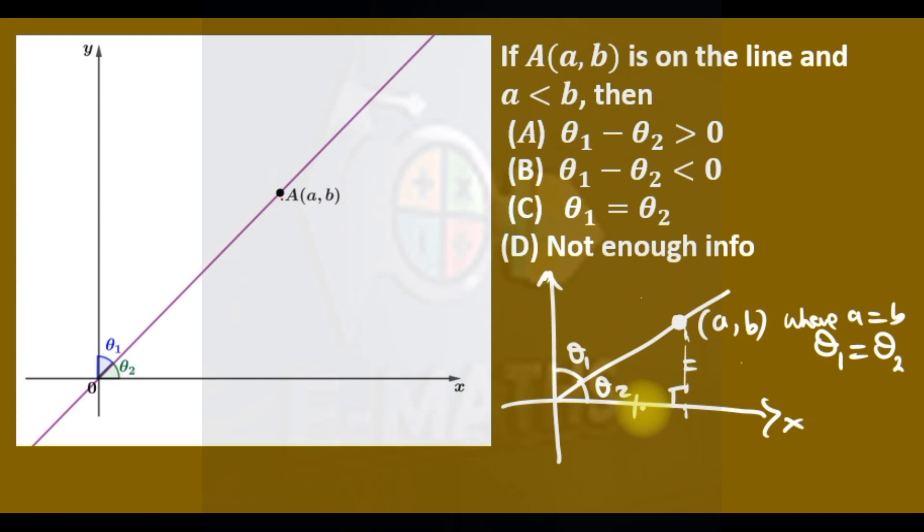This length is equal to this length, so this is 45 degrees while this is 45. But if a is less than b, meaning that this is the first case, the second case if a is less than b, the point here is now (a, b).